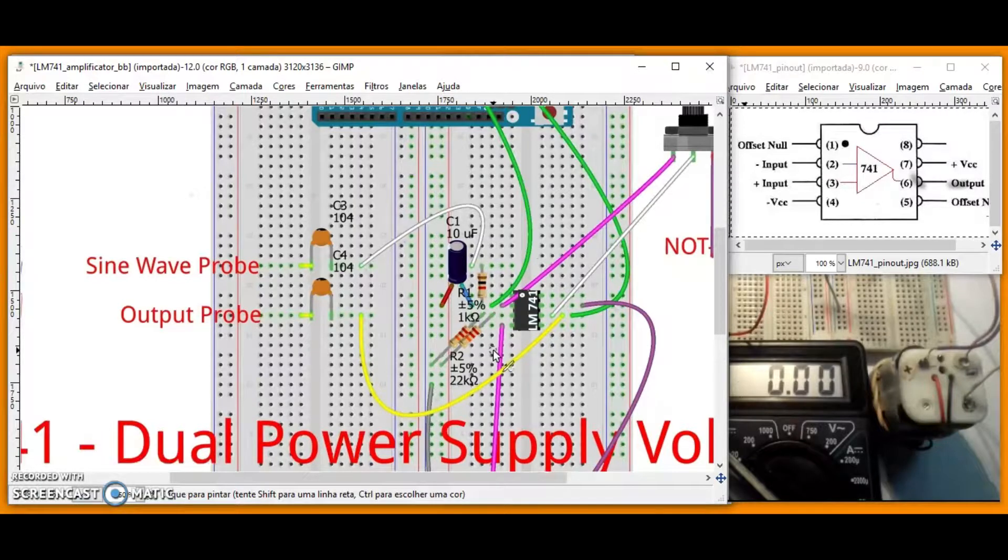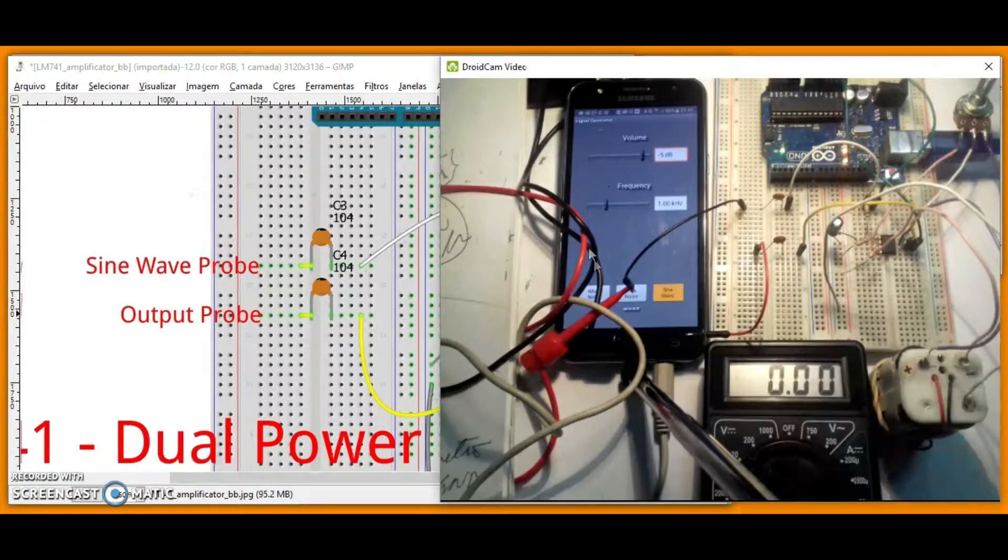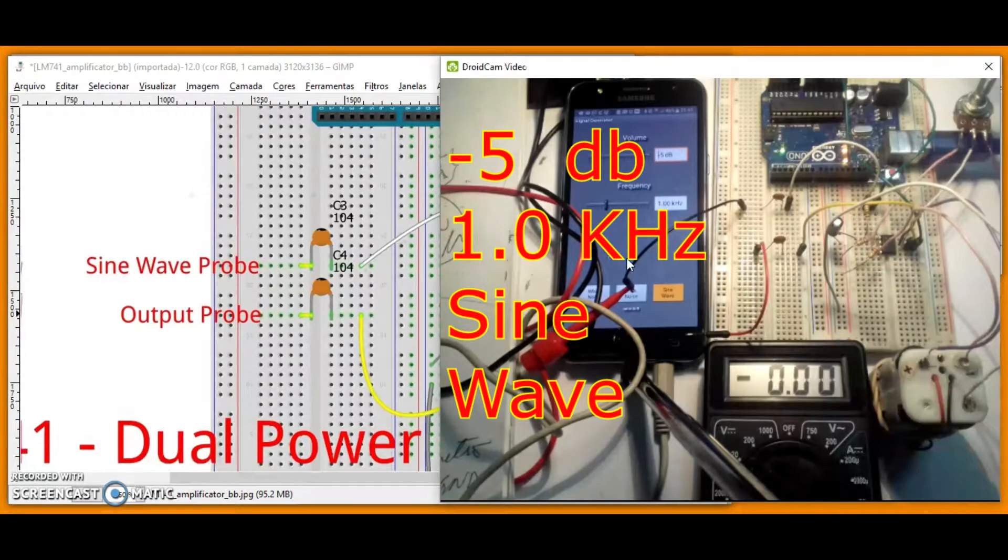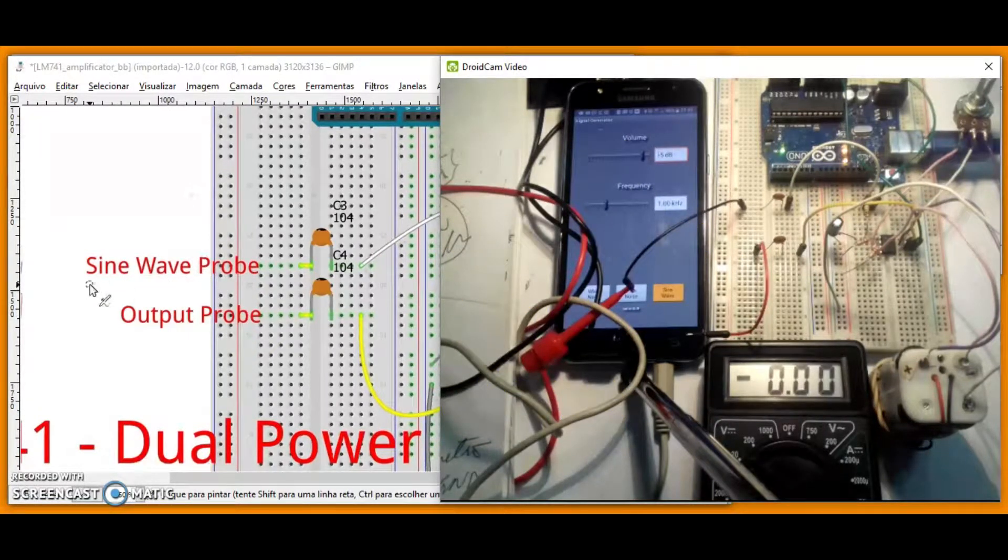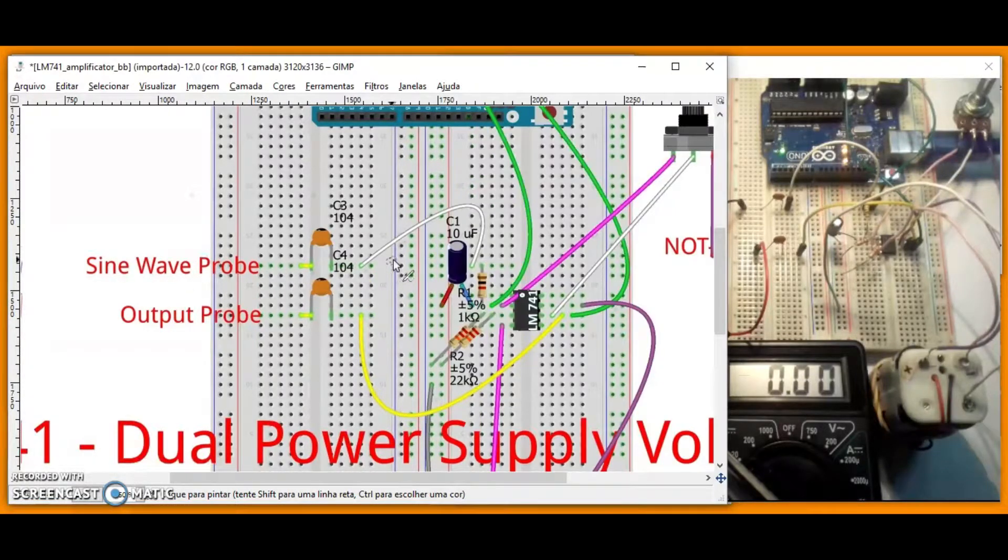The input signal is connected to a function generator. 1.0 sine wave was used as the signal input. 5.5% tolerance resistor will use it, but if the application requires an accurate gain response, use 1% tolerance resistor.